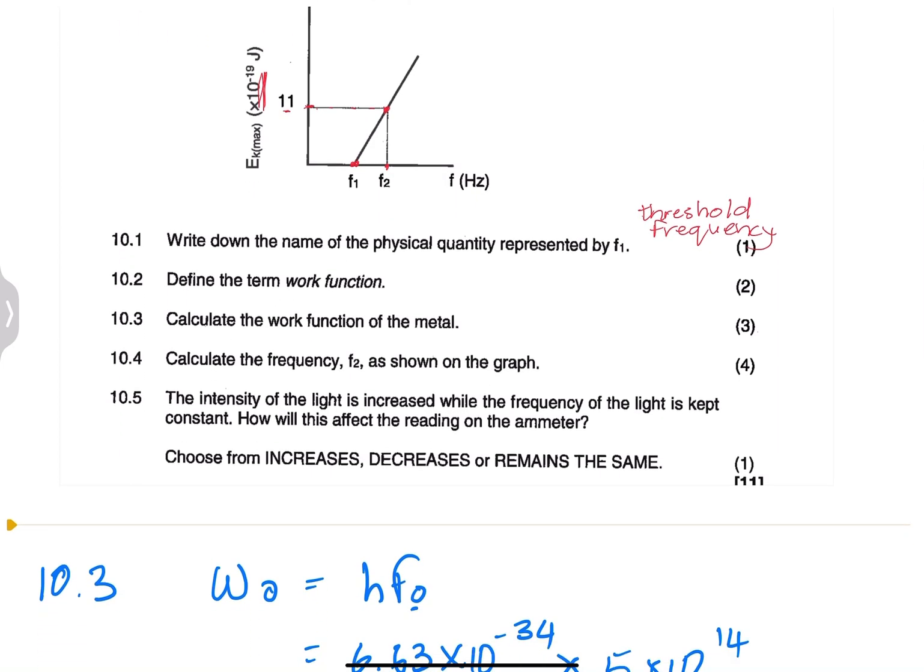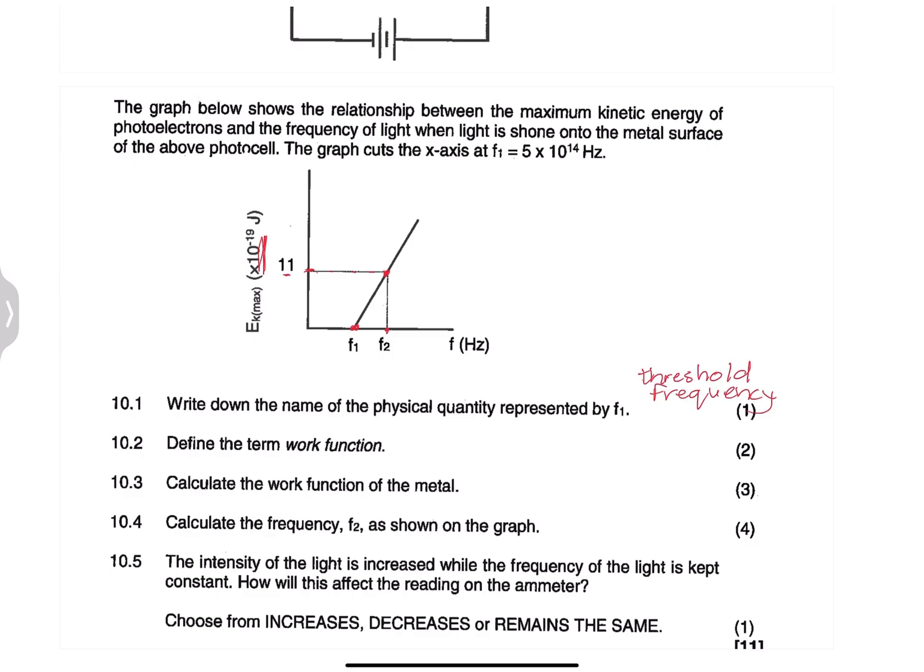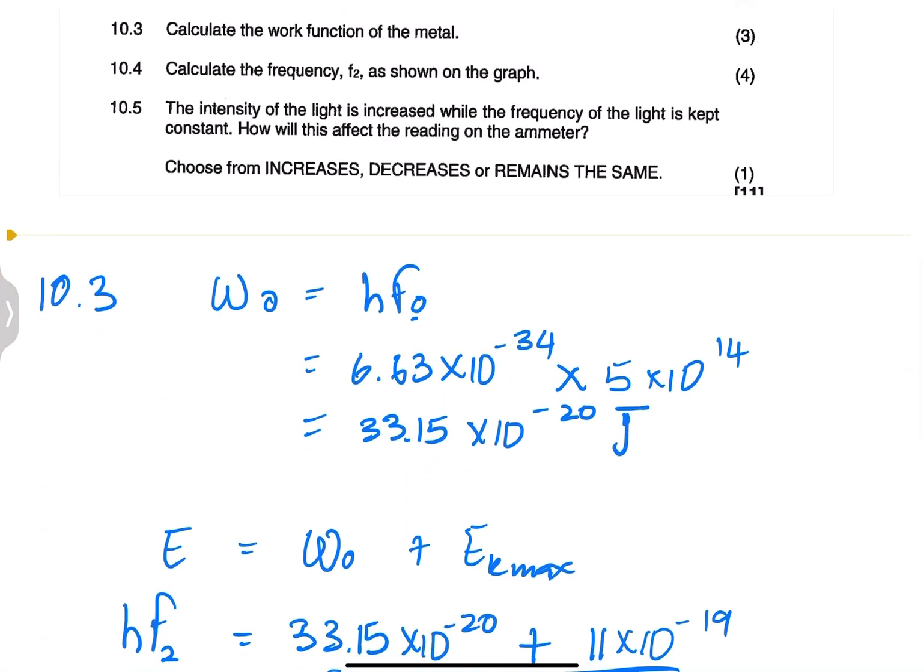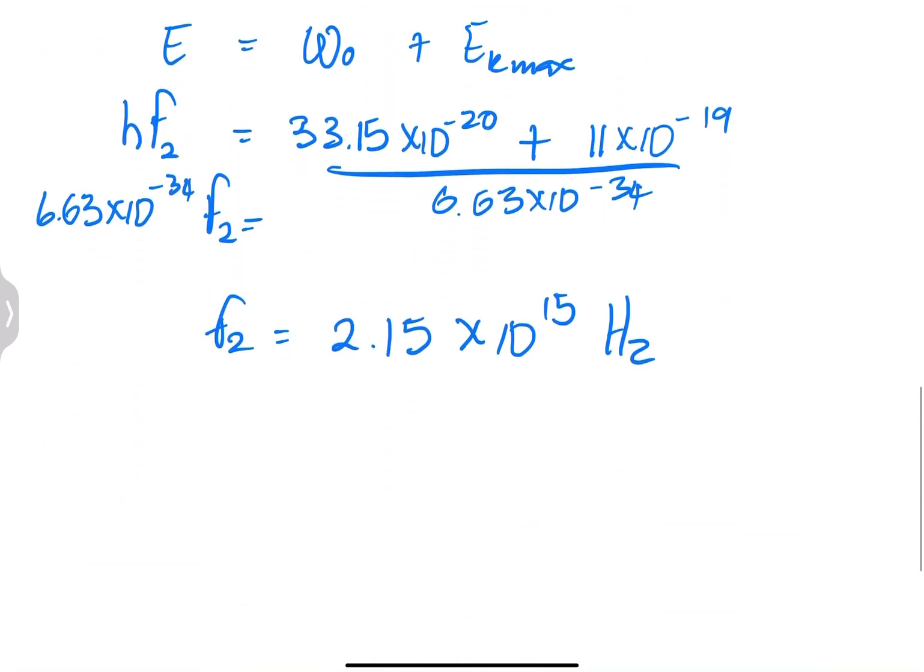And then the final question, they say to us, the intensity of the light is increased while the frequency, so note, they increase intensity, they say while the frequency is kept constant, how will this affect the reading on the emitter? So please remember that the reading on the emitter will increase when we increase the intensity.